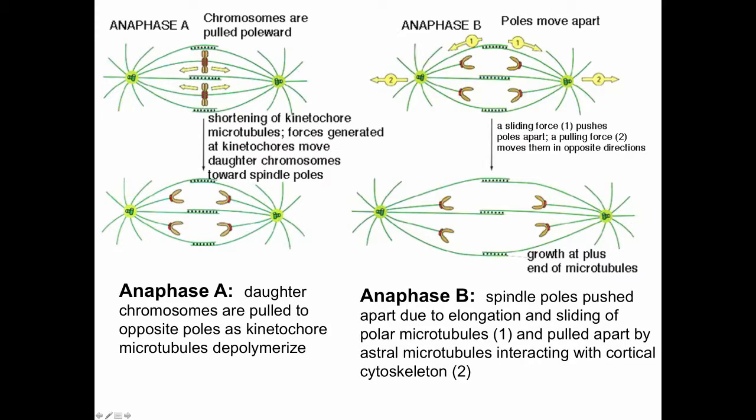At anaphase B, the spindle poles are pushed apart due to elongation and sliding of polar microtubules past each other with kinesin motors moving in opposite directions on the microtubules. They're also pulled apart as the astral microtubules interact with the cortical cytoskeleton. So at anaphase B, there's a pushing of the spindle poles apart and a pulling of the spindle poles apart.